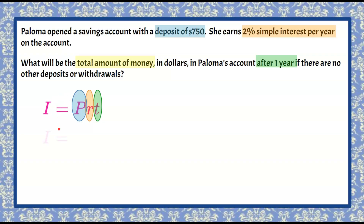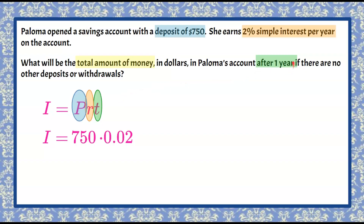We bring down our I because interest is what we're trying to find. Our principal is the amount we deposited, so $750. Our rate is 2%, but we have to write it as a decimal — we move the decimal point two spaces to the left, giving us 0.02. Then we multiply by the amount of time, which is one year, so we multiply by 1.